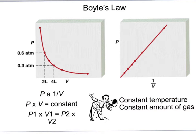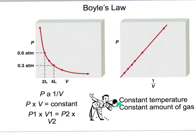The first gas law we will review is Boyle's Law. The formula for Boyle's Law is P1V1 equals P2V2. Notice from the graphs the relationship between pressure and volume: as pressure increases, volume decreases. Therefore, the pressure of a gas is inversely proportional to the volume it occupies. Note that temperature is not in the equation because temperature is held constant.